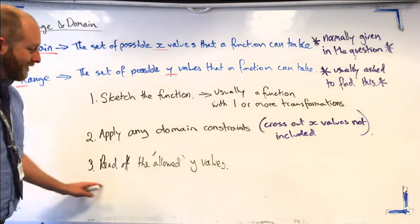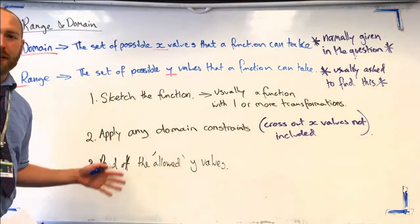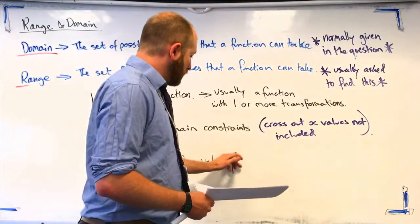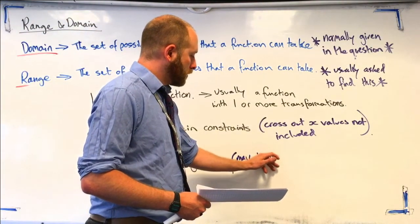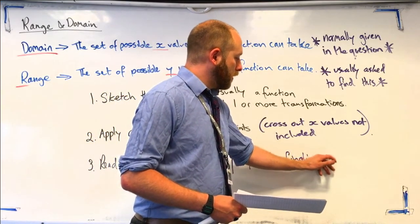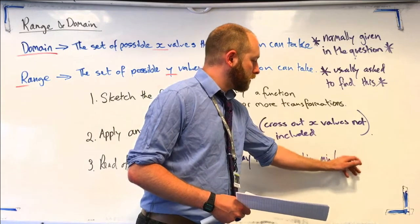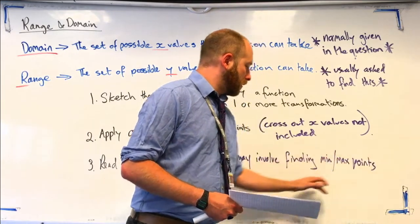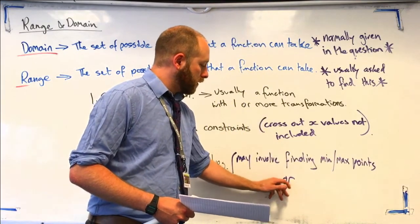So, by hook or by crook, try and read off what y values are allowed in this function. So, may love finding min max points for asymptotes.